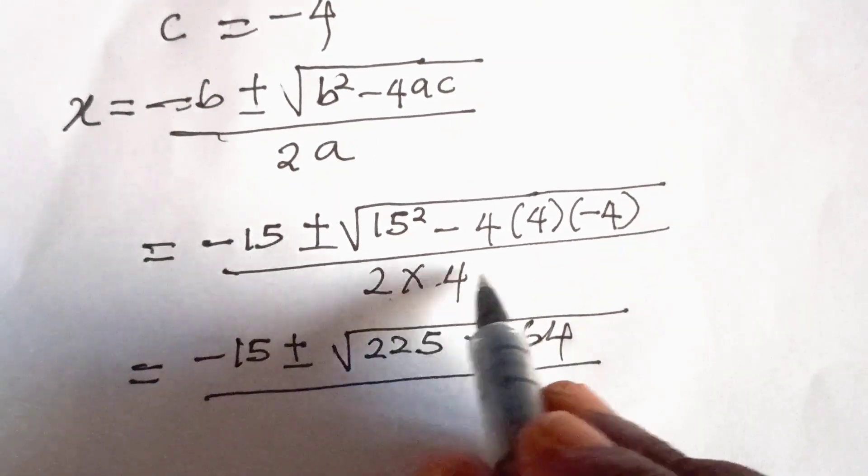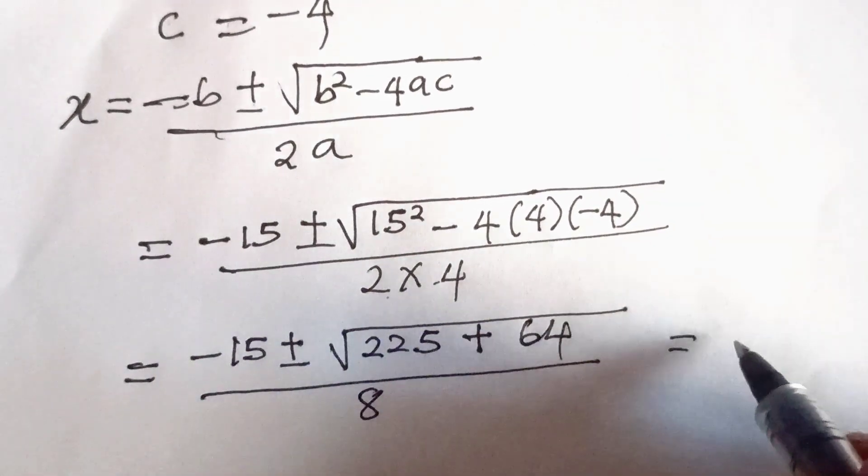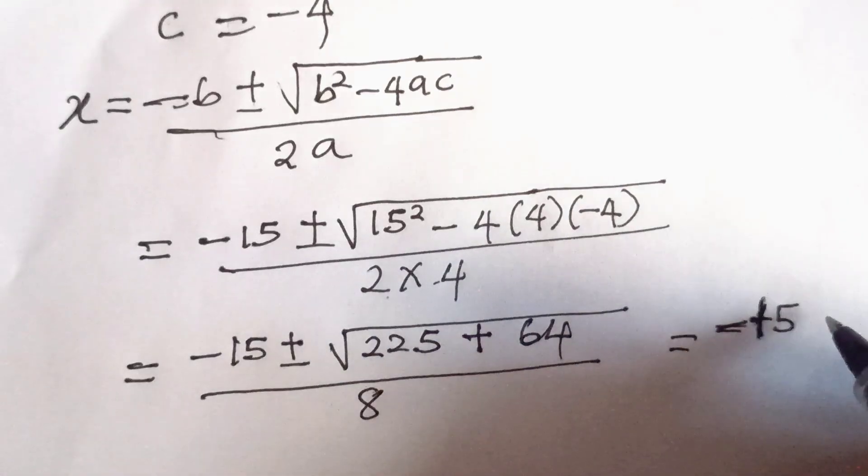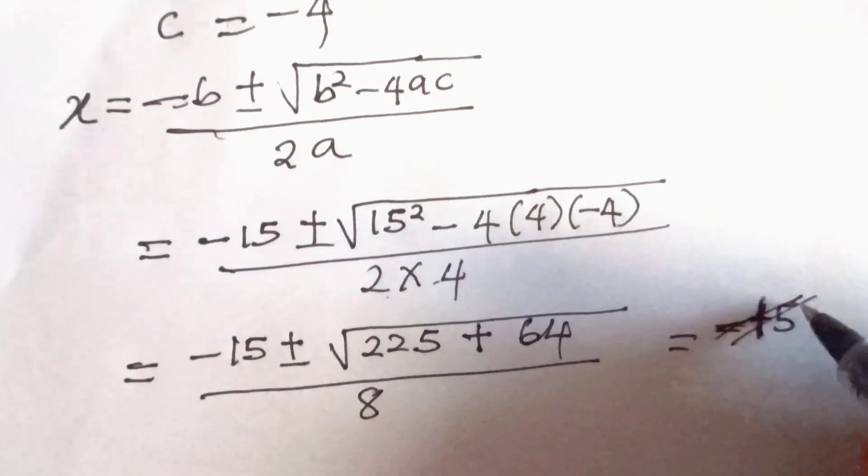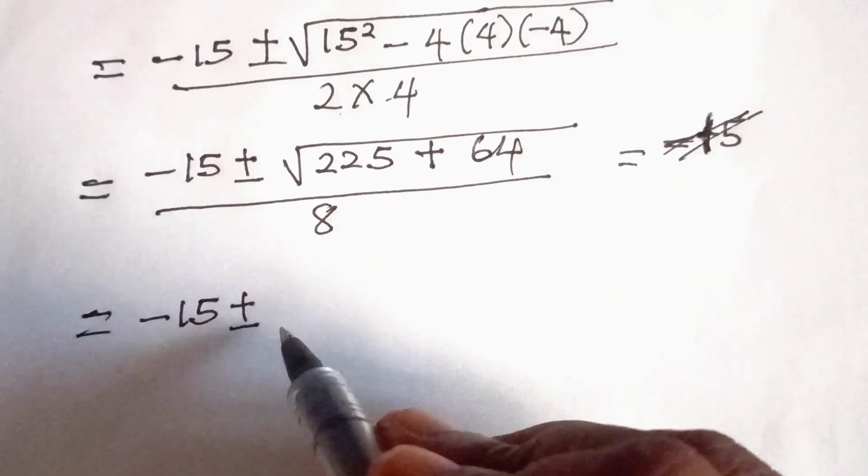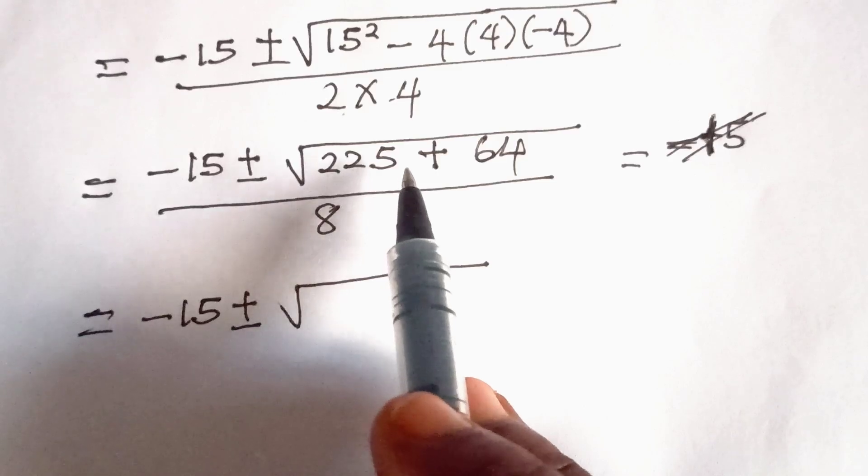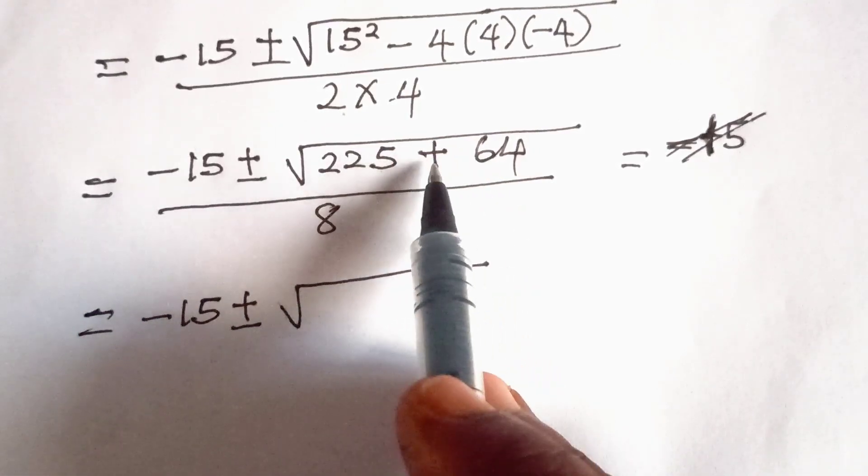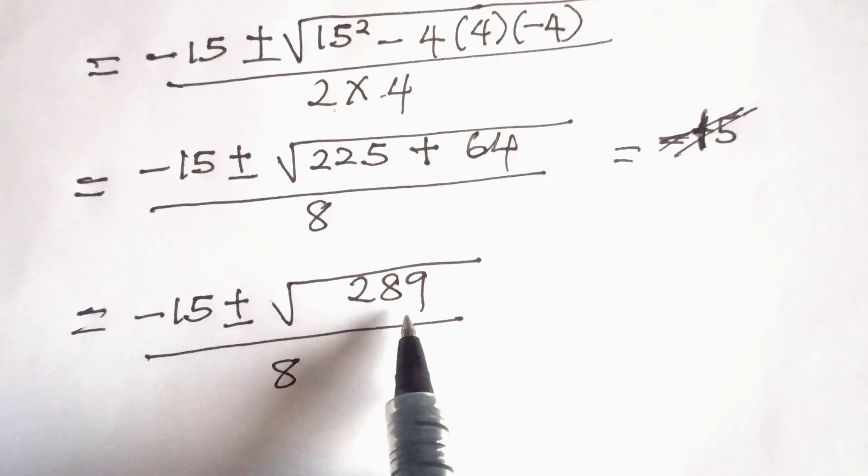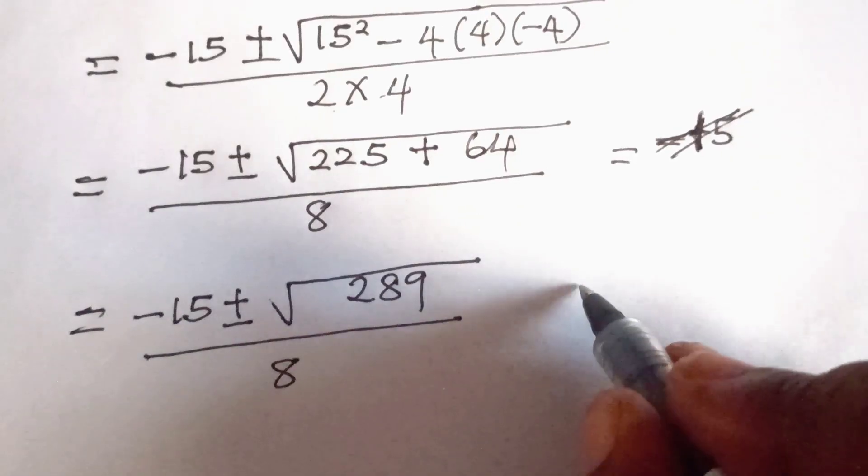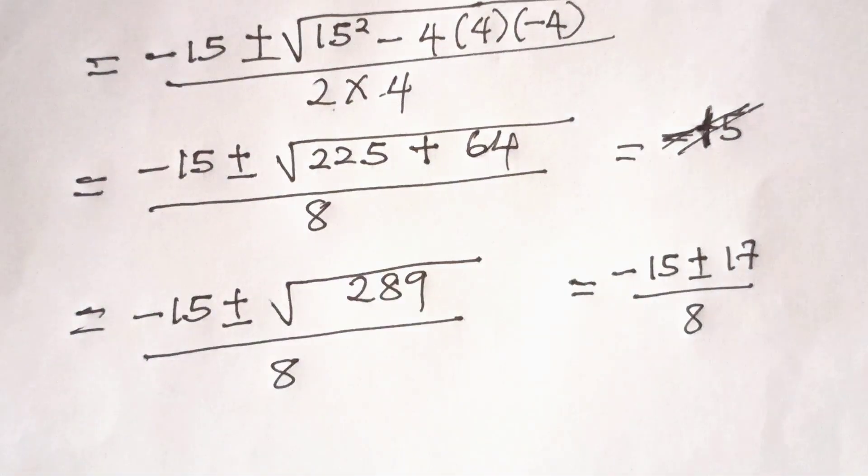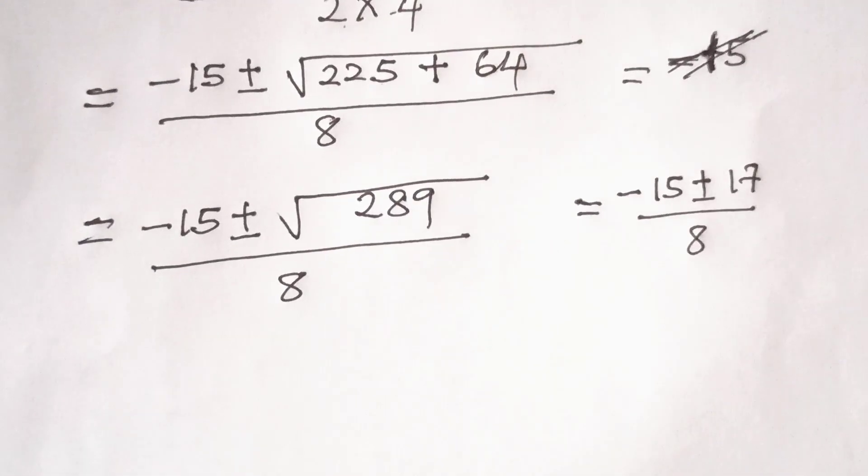All divided by 2 by 4 is 8. So this is equal to minus 15 plus or minus square root of, if we add the two numbers here, 225 plus 64, we have 289, all divided by 8. 289 is a perfect square and the square root of 289 is 17. So this will give us minus 15 plus or minus 17 all over 8.